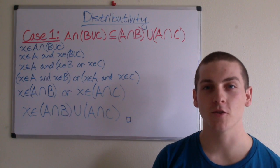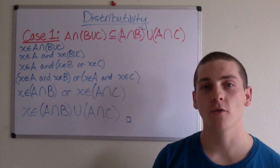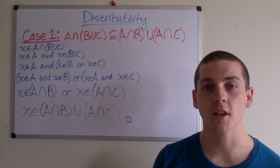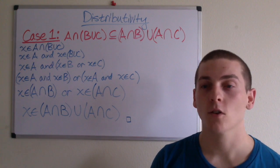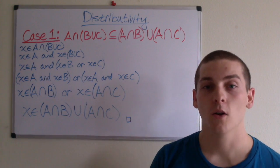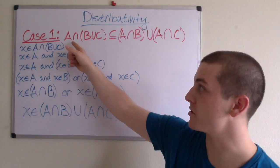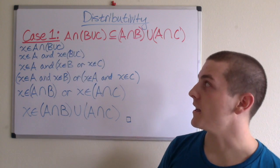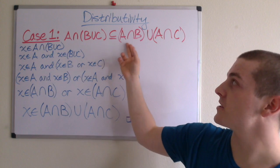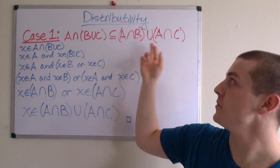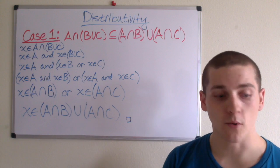In my previous video on subsets and supersets, I stated that to show equality, you have to prove that each side of an equation are subsets of each other. So to prove the distributive law, we're going to have this video and the next video. In this video, I'm going to be showing that A intersection (B union C) is a subset of (A intersection B) union (A intersection C). So let's start the proof.